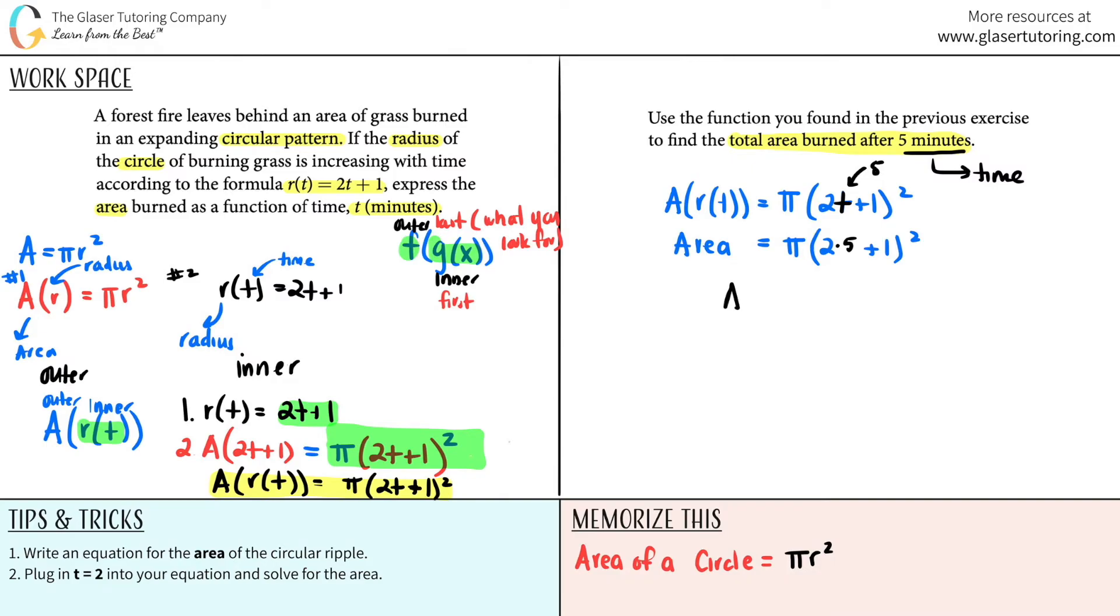So now we can simplify that. This is all just algebra now, guys. Area = π(2×5 is 10, 10 + 1)². 10 + 1 is 11. 11², right? We have to do this first. 11² is 11×11. It is not 11×2. So 11×11, I believe, is 121? Yes, 121. So area = 121π. Or you could have just kept it as π×121. It doesn't really matter. This is if you left it in terms of π.